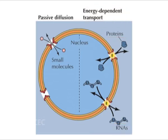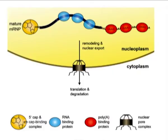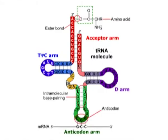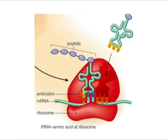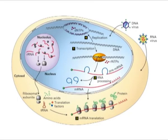Each pore is capable of transport in both directions, apparently even at the same time. Transport of macromolecules including mRNPs, tRNAs, and ribosomal subunits out of the nucleus, and transport of all nuclear proteins translated in the cytoplasm into the nucleus, occur through nuclear pores in a process that differs fundamentally from the transport of small molecules and ions across other cellular membranes.